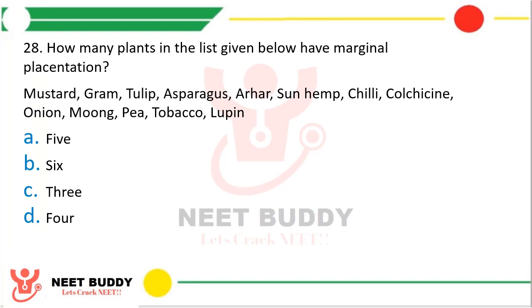Question 28: How many plants in the list given below have marginal placentation? The correct answer is option B, that is 6.